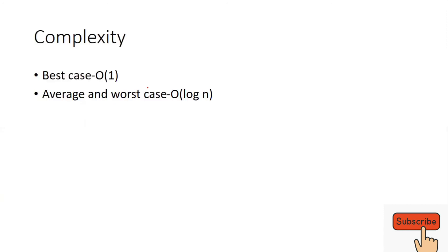That's all about binary search. In the best case, the search element is found at the middle position. The complexity of binary search is O(log n). Log n is much less than n, which makes binary search more efficient than linear search.